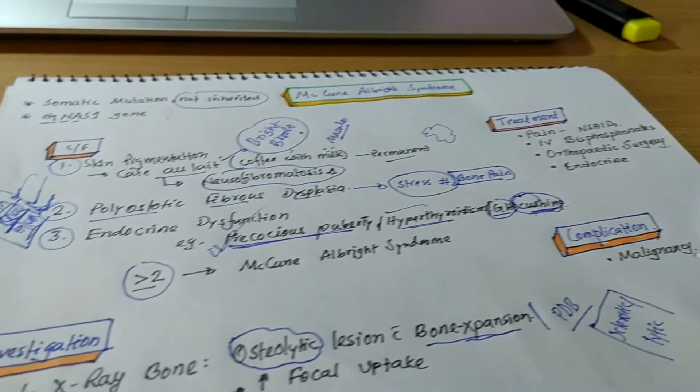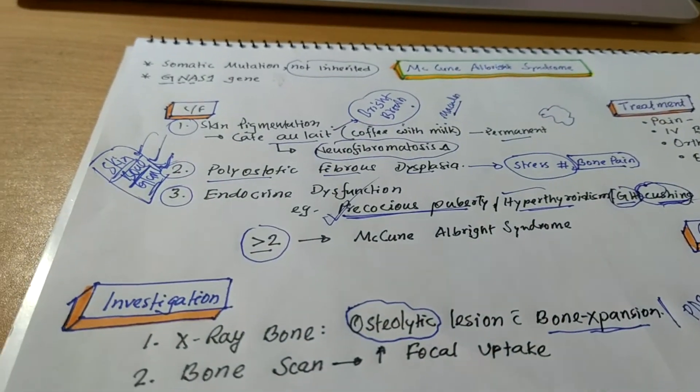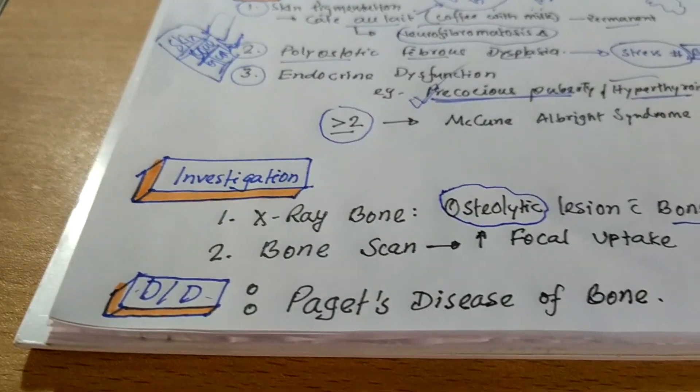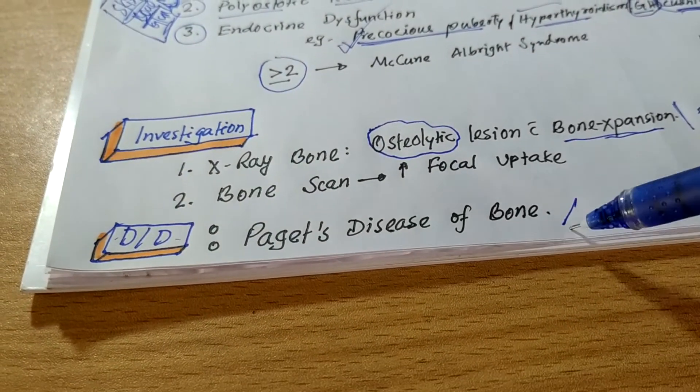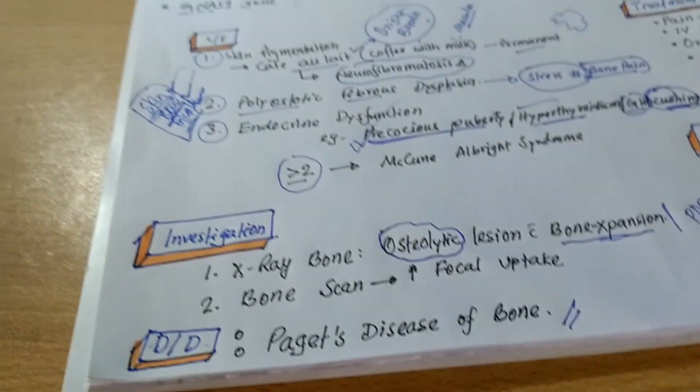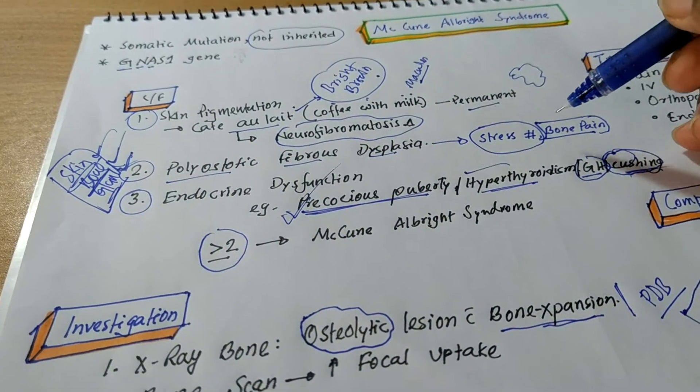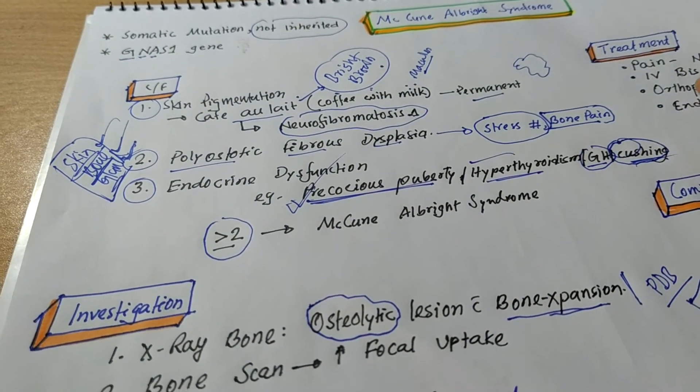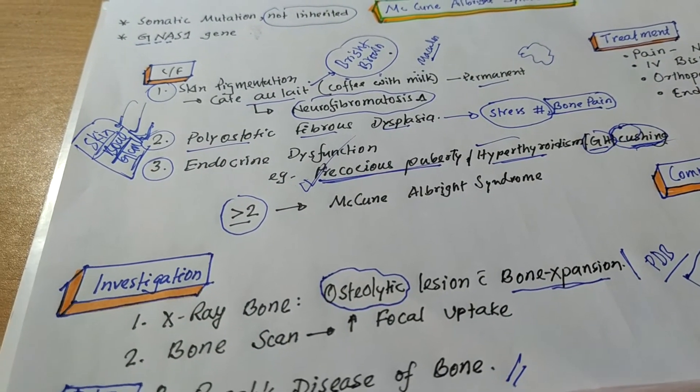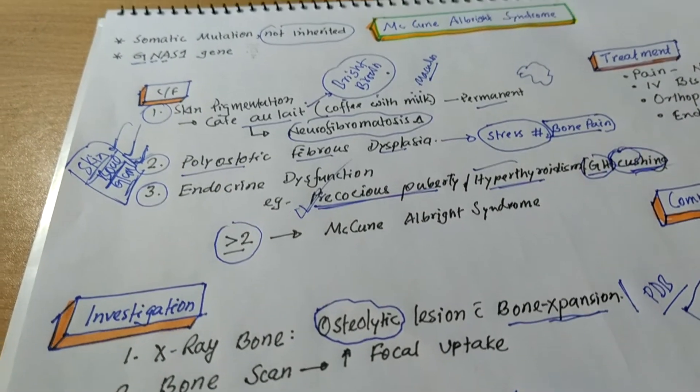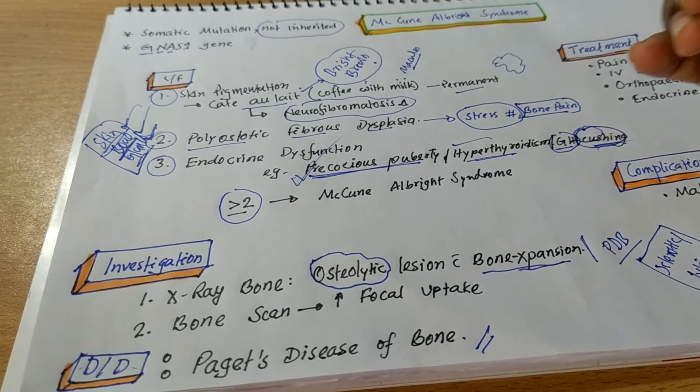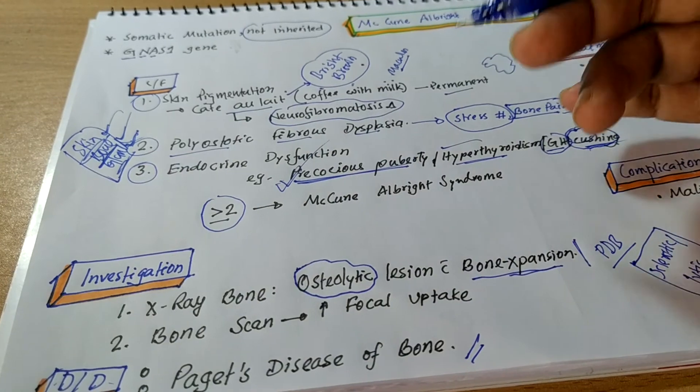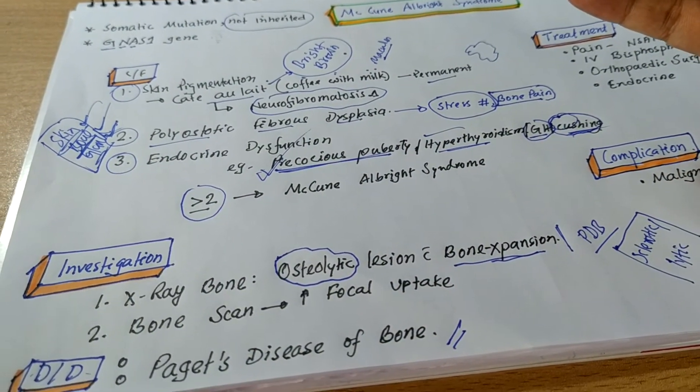Okay. Now, the most important and very near differential diagnosis should be Paget disease of bone. Okay. As because the Paget disease of bone presents with multiple pathological fracture and bone pain and stress fracture. And McCune-Albright syndrome also presents with this. And investigation more or less correlates with this Paget disease of bone.